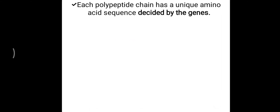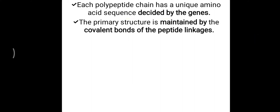Each polypeptide chain has a unique amino acid sequence, and that sequence is decided by genes. From transcription — DNA to RNA — and translation — RNA to protein — that is how protein is synthesized, with the help of genetic codons. For example, the first codon AUG gives methionine, and the second codon GGG gives glycine. That particular sequence is decided by the gene, and the primary structure governs secondary, tertiary, and quaternary structures.